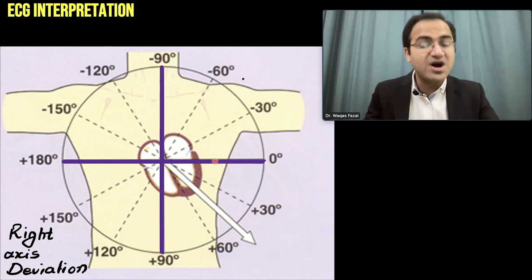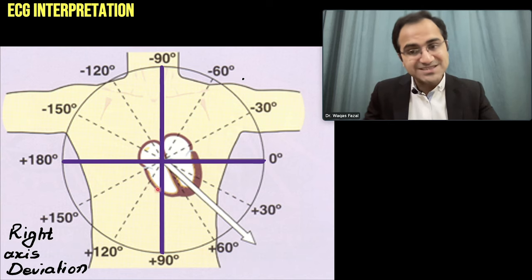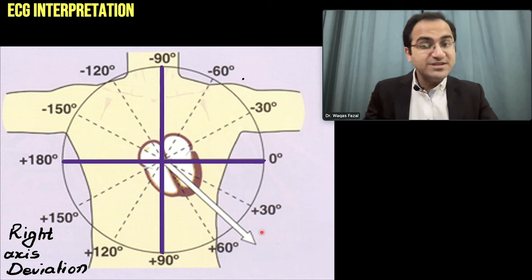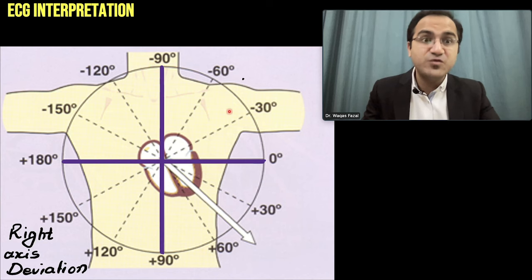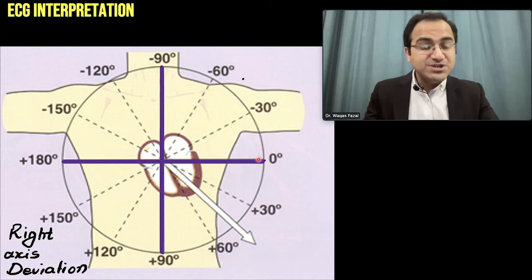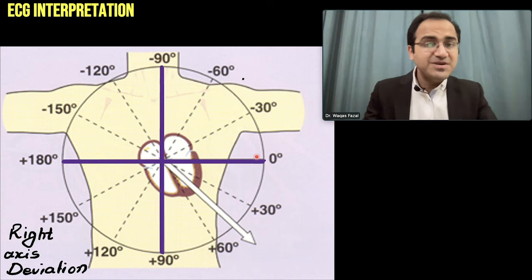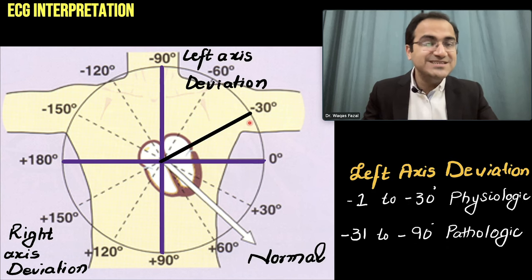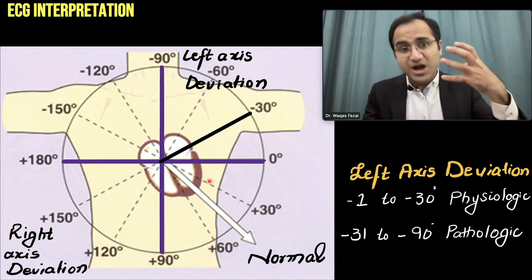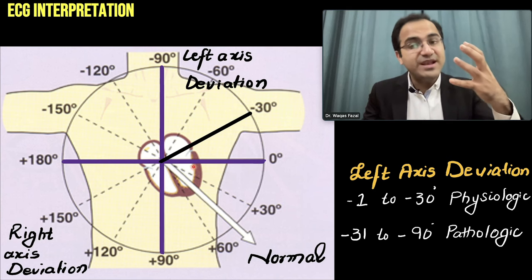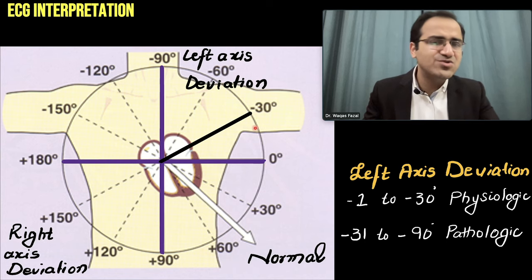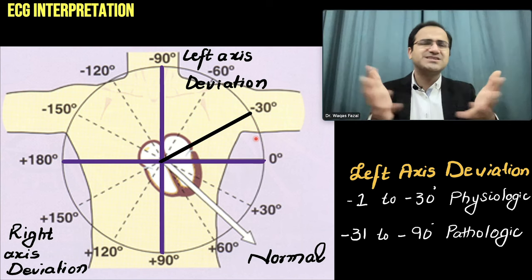Right axis deviation means either there is myocardial ischemia on the left side of the heart, or there is hypertrophy of heart tissue on the right side, causing the axis to deviate right. If the vector deviates from 0 to minus 90 degrees, that is left axis deviation. Left axis deviation is divided into two types: pathologic and physiologic. Deviation from 0 to minus 30 degrees is considered physiologic, because in athletes, left myocardial tissue becomes hypertrophied normally, and that is a normal result.